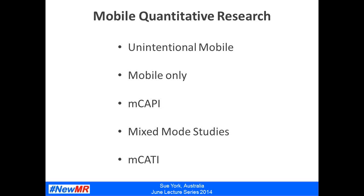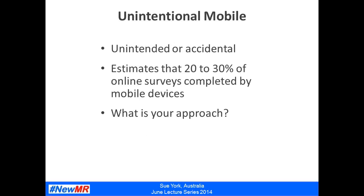Mobile quantitative research tends to encompass two broad areas: survey research and other quantitative research. The mobile quant survey techniques include unintentional mobile, mobile-only studies, mobile CAPI studies, mixed mode studies and MCATI studies. Most market researchers who conduct online surveys are already using mobile market research, even if they have decided not to and even if they are not aware of it. Any online survey — even if it's not been designed for a mobile device — is likely to be completed on a mobile device by some participants, unless you've taken specific measures to avoid this.